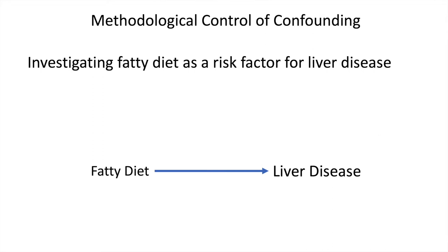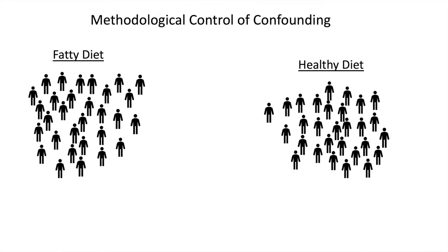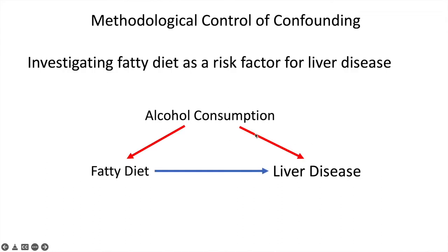If we're interested in investigating the relationship between fatty diet and liver disease, we're going to be following a population that ideally will be exchangeable — those who have a fatty diet and those who have a healthy diet. If we're looking at the rate of liver disease in the two populations, ideally we want to isolate the effect of diet, so we want that to be the only way these two groups differ. However, people generally self-assign themselves to exposure, and those who choose a fatty diet and those who don't might differ by some other variables. That becomes an issue, especially if that variable is also related to the outcome, which would represent a confounder.